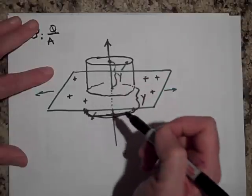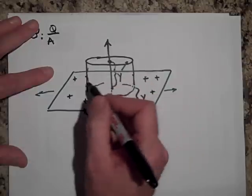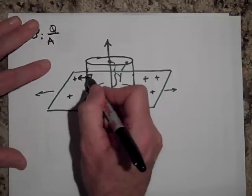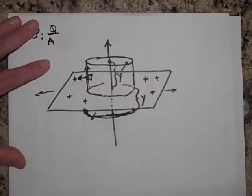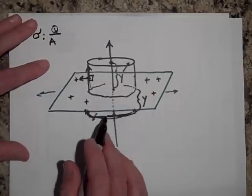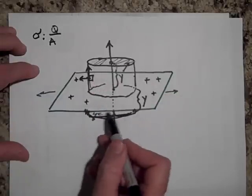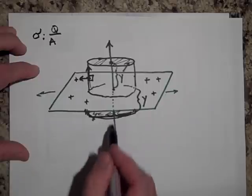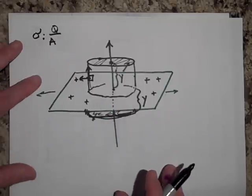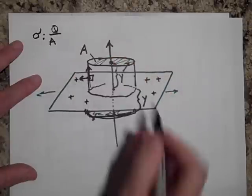Now that means then that there is no flux through the sides because here's your DA. DA is this way for the side and your E is this way. And so there is no flux out the sides. There's just flux out the top and the bottom. And actually the flux out the top is equal to the flux out the bottom, just because of symmetry arguments. There's just as much field going down and the area is just as the same. So I'm going to call that area again. We could call it pi r squared, but I'm going to just call it A again.